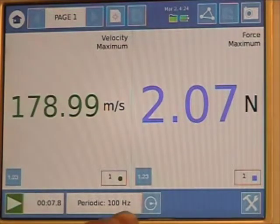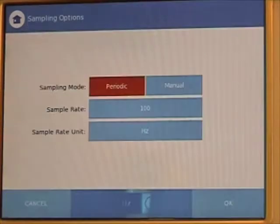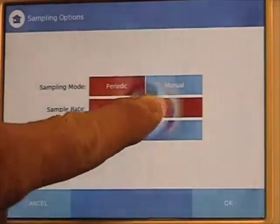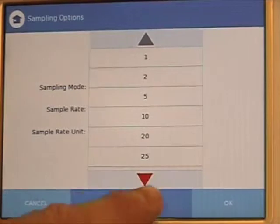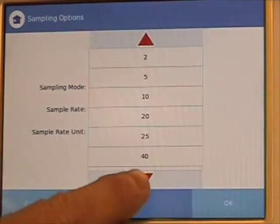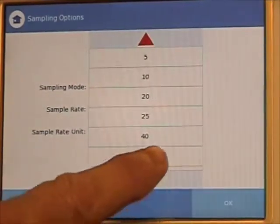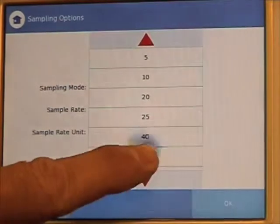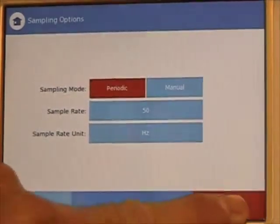To do that, again, you press the icon at the bottom of the screen. Go back to the sampling rate, select 50, and press OK.